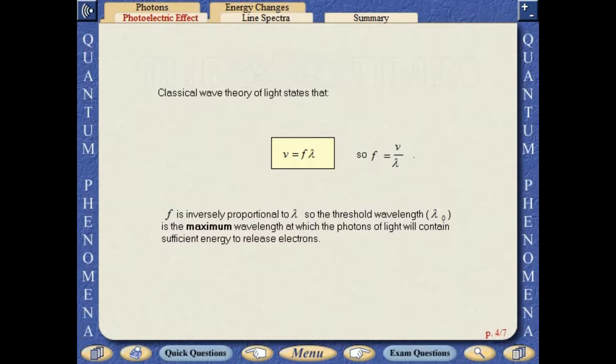Classical wave theory states that v equals f lambda, so f equals v over lambda. F is inversely proportional to lambda, so the threshold wavelength is the maximum wavelength at which the photons of light will contain sufficient energy to release electrons.